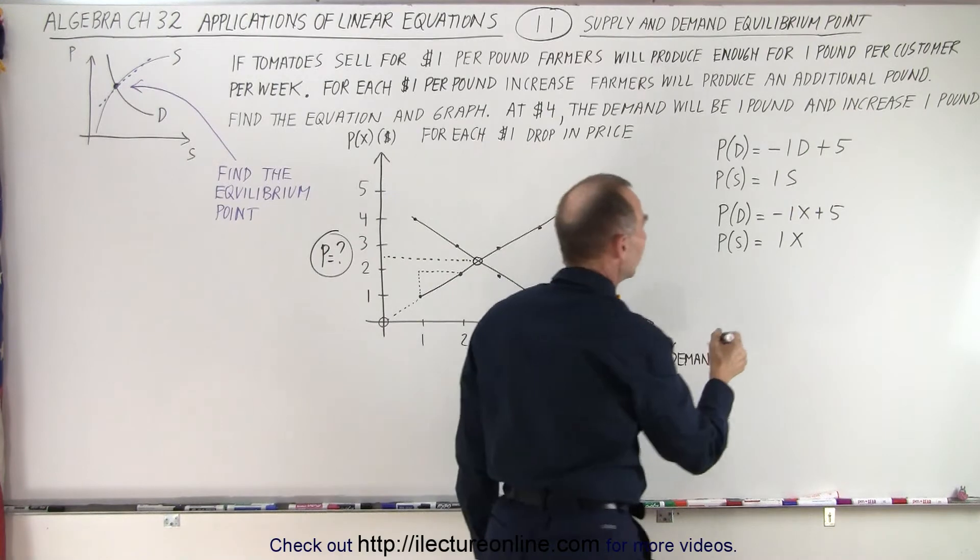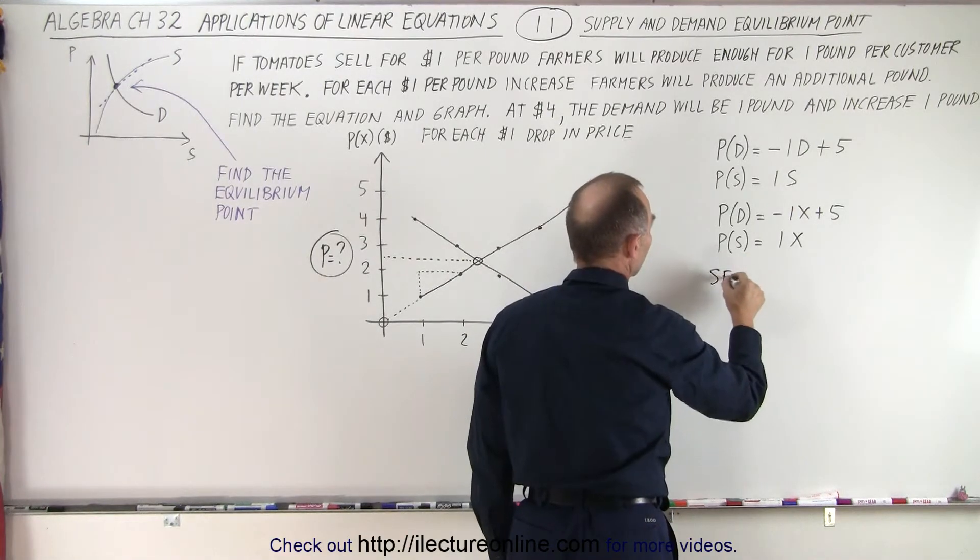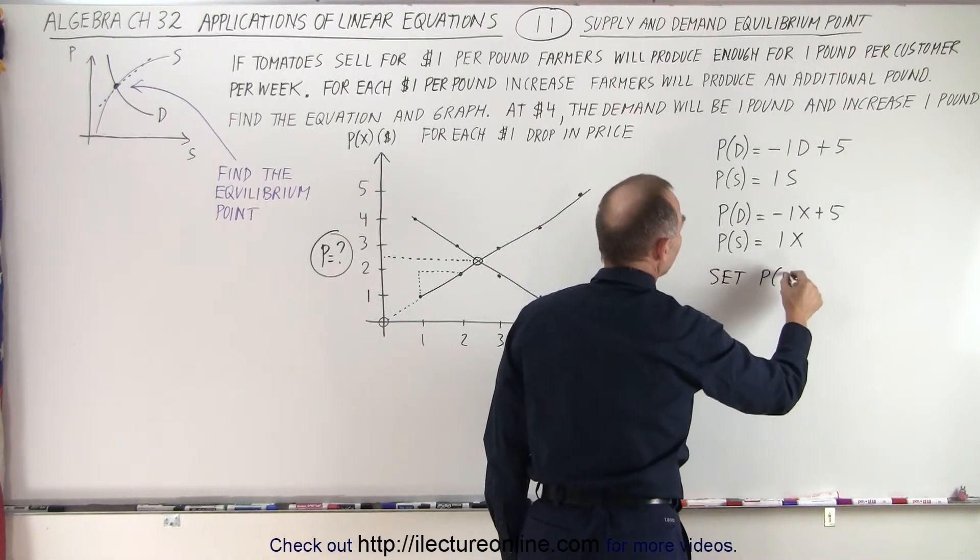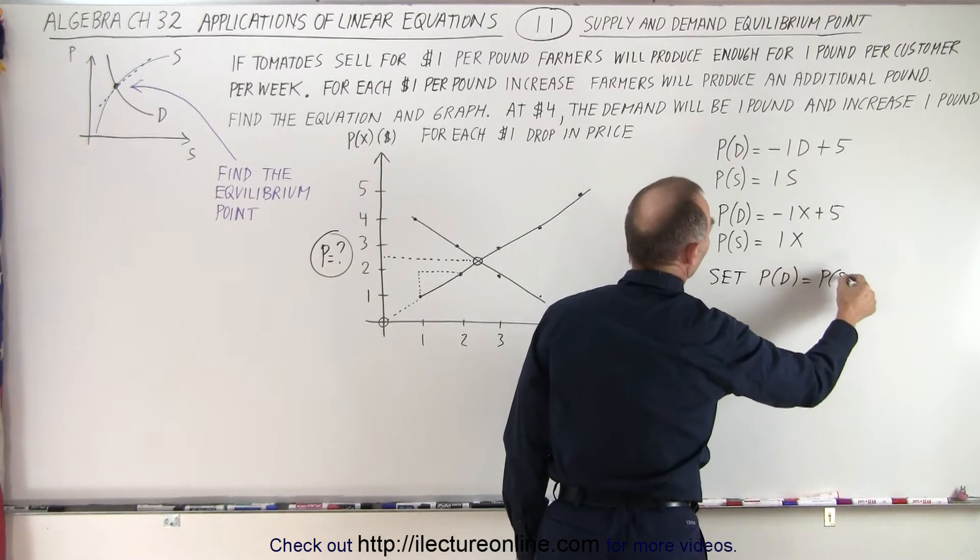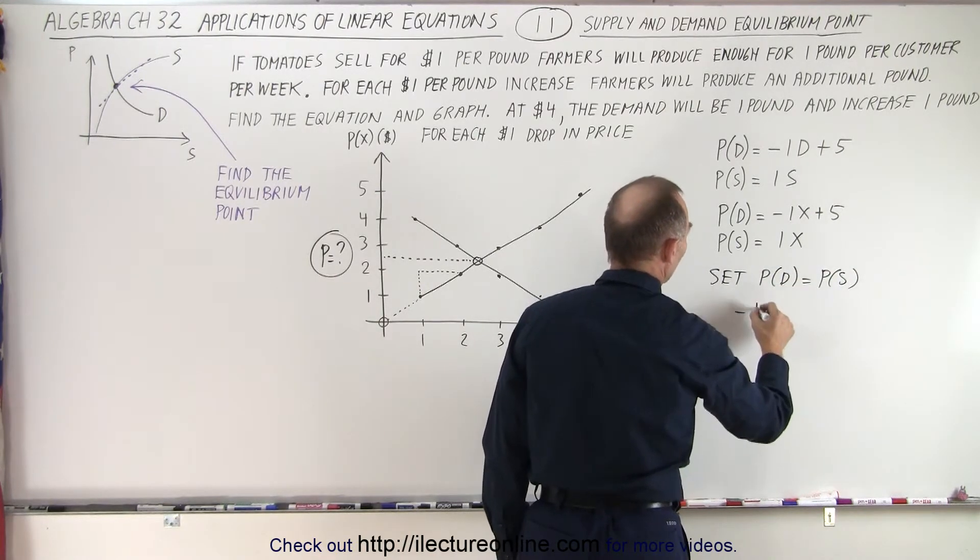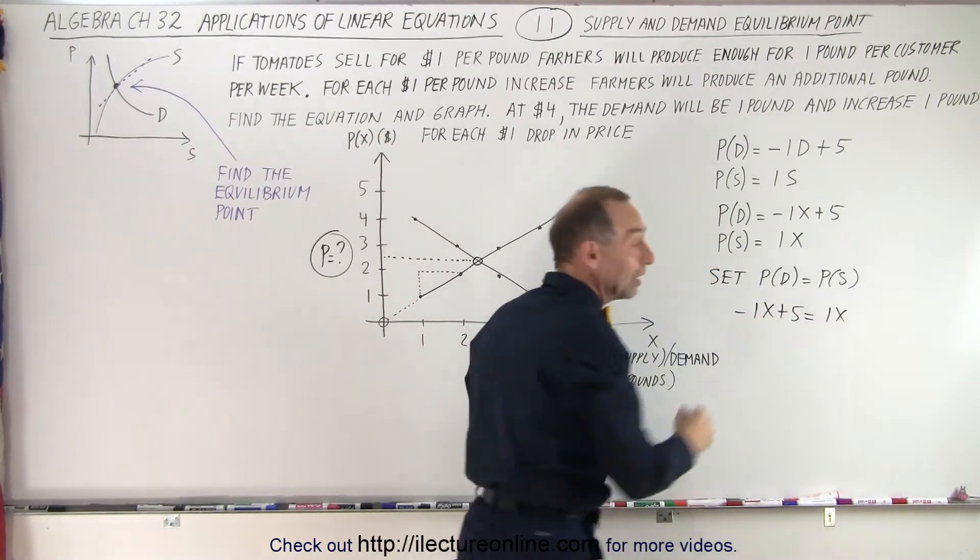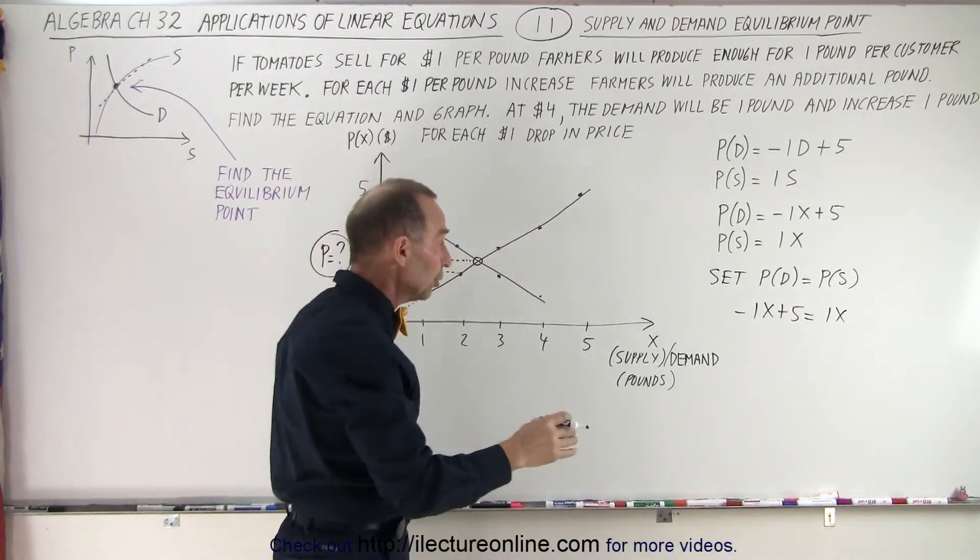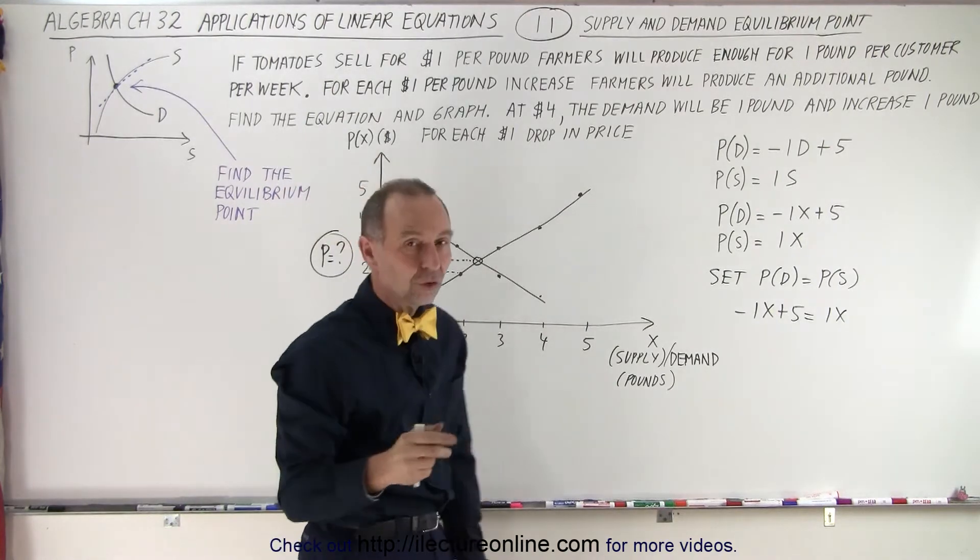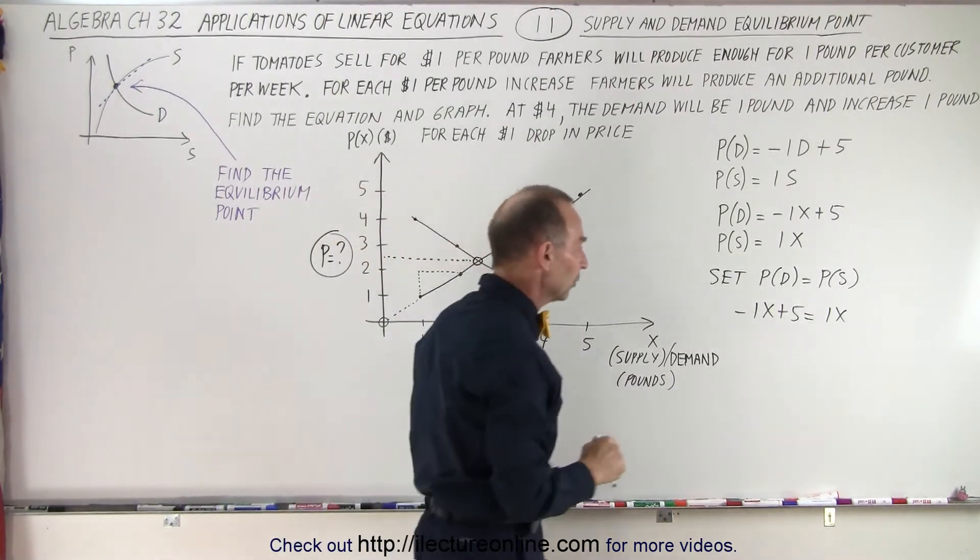So now what we do is, we're going to set the demand equation equal to the supply equation, which means that minus 1x plus 5 equals 1x. And what we're going to do here is solve for x, and then once we know x, we can then find the price associated with that equilibrium point.